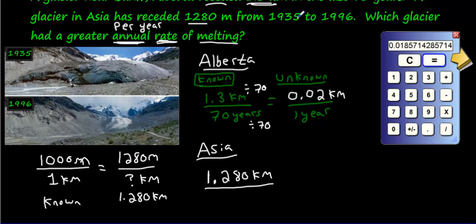We're going to go 35, 45, 55, 65, 75, 85, 95, and one more year. So 61 years.